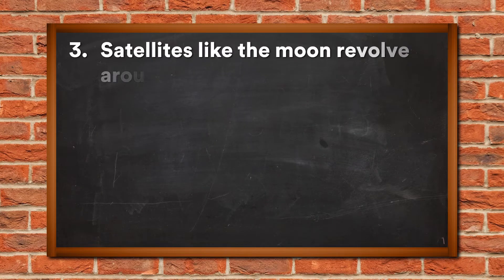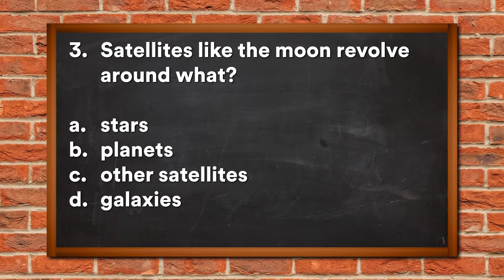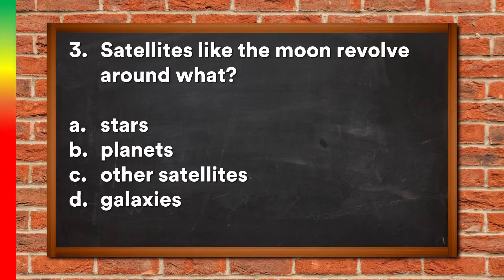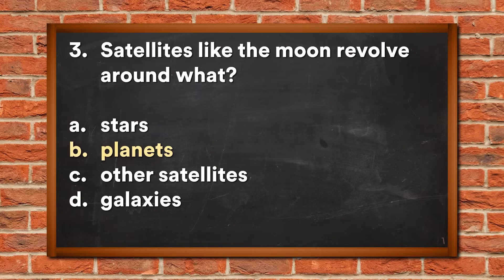Question 3: Satellites like the moon revolve around what? A. Stars, B. Planets, C. Other satellites, D. Galaxies. The answer is B, Planets.